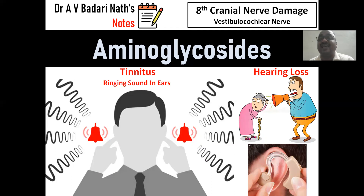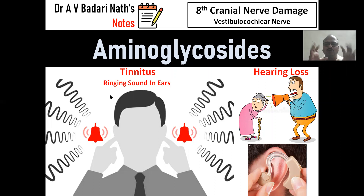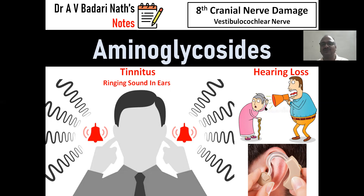Aminoglycosides causes eighth cranial nerve damage. What is the eighth cranial nerve damage? It means vestibulocochlear nerve — it damages. If you are using aminoglycosides regularly or frequently, it starts with tinnitus. Two things will happen. First one is tinnitus. Tinnitus means ringing sound in the ears — both ears or single ear. You will get a bell sound like that. It starts with tinnitus and gradually hearing loss will come.